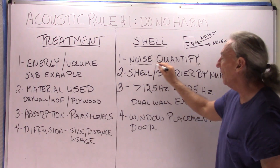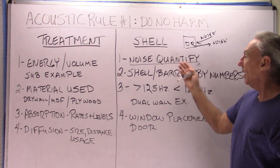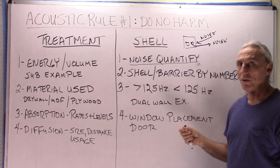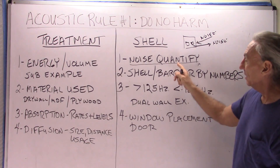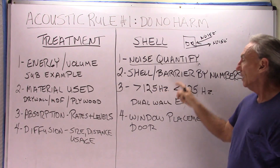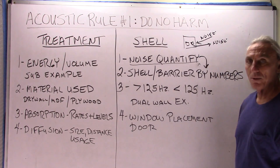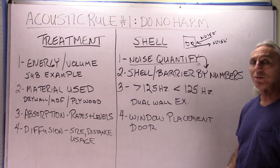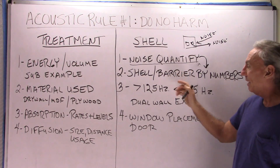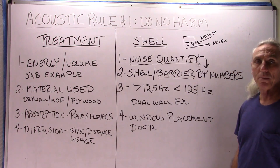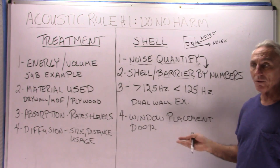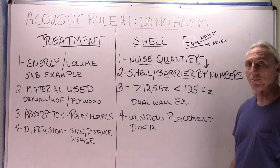The first thing you have to do is not guess. You must quantify your noise issue through measurements. You must find out what the frequency is that is causing the noise and how large it is, because the measurements determine exactly what materials you use in the barrier or shell. The numbers tell you exactly what to do. A lot of people guess at this and they always guess wrong, because there is a direct correspondence between the frequency and amplitude of the noise issue and what materials you are going to use for the barriers. We call it barriers by numbers. You have got to quantify and measure first — it is not difficult, you can do it on an iPhone, and we can show you apps to do that.